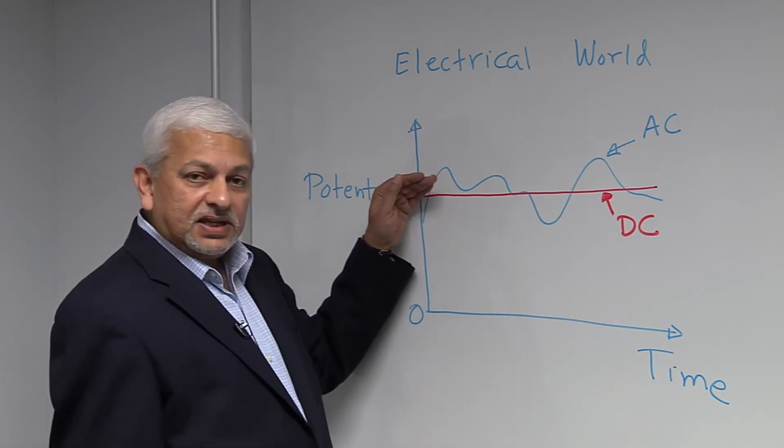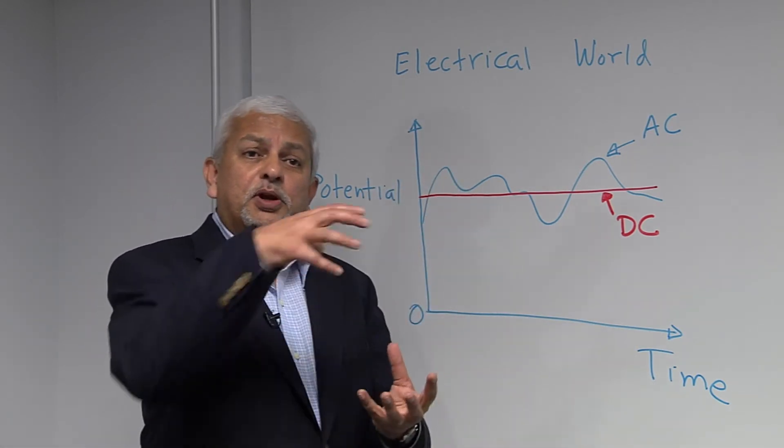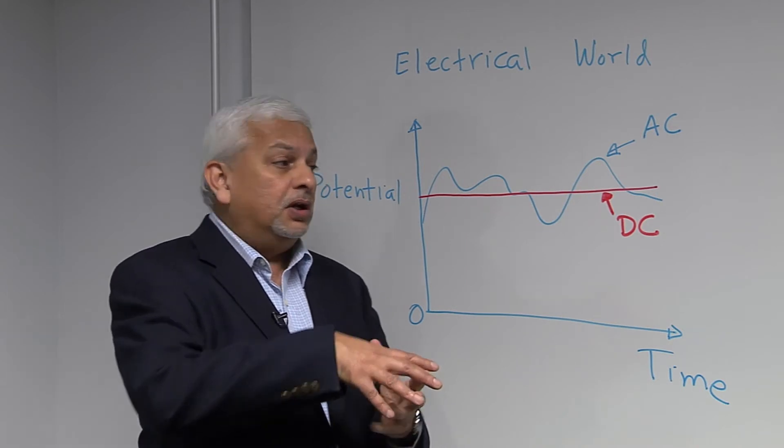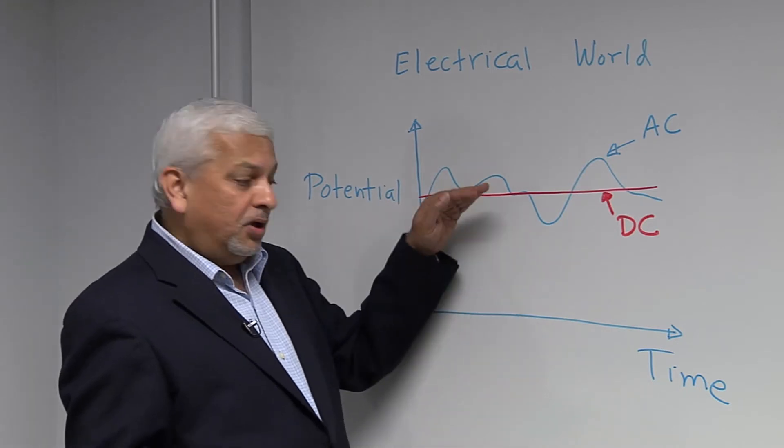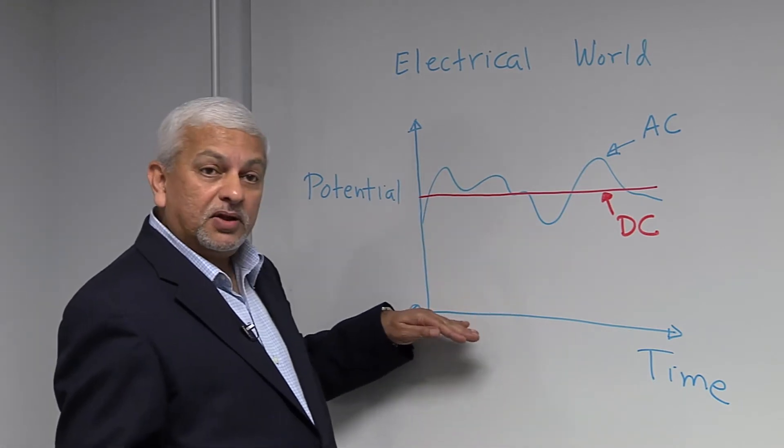So we can say that the AC is superimposed on top of the DC. I can keep the signal the same, but the DC value can go up and down. For example, it may be around zero.